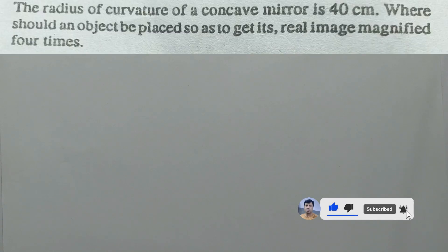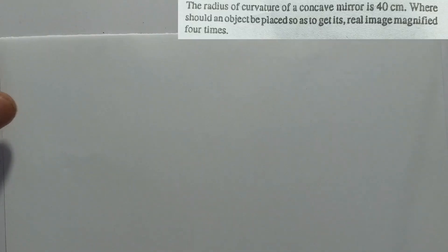Assalamu alaykum, my name is Faisal Wahab, you are watching my YouTube channel. The problem number 3.6 is on reflection and propagation of light. The radius of curvature of a concave mirror is 40 cm. Where should an object be placed so as to get its real image magnified four times?